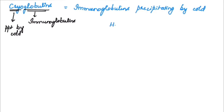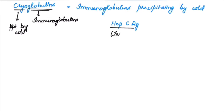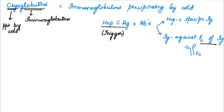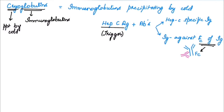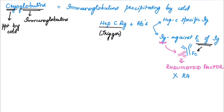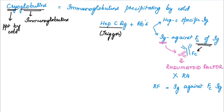Now we will look at the pathogenesis of cryoglobulinemic vasculitis. Hepatitis C antigen acts as a trigger against which antibodies are produced, and these antibodies are of two types: antibodies specific against hepatitis C antigen, and antibodies produced against the Fc segment of the immunoglobulin. The antibodies against the Fc fragment are known as rheumatoid factor, and these can be of IgG or IgM type. Rheumatoid factor does not mean it is specific for rheumatoid arthritis — it simply refers to immunoglobulins produced against the Fc fragment of an immunoglobulin.